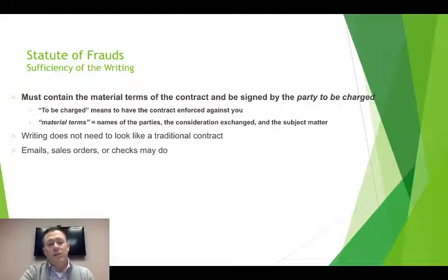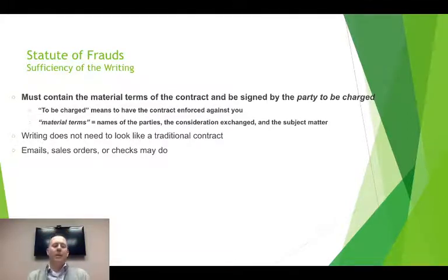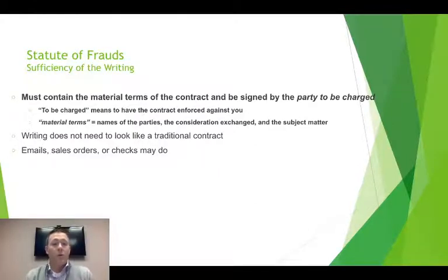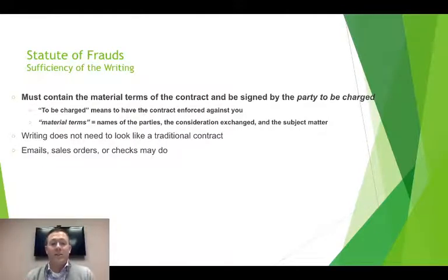What has to be in the writing under the statute of frauds? Not much — just the material terms: basically what you're exchanging and what the consideration is. For example, I'm going to sell a piece of land. There was a case where two friends at a bar were drinking and one agreed to sell the other his farm. He wrote the contract down on a napkin — which matters because it's land, so it has to be in writing. The statute of frauds doesn't say it has to be on parchment paper or look fancy; it just has to be written down with the material terms.